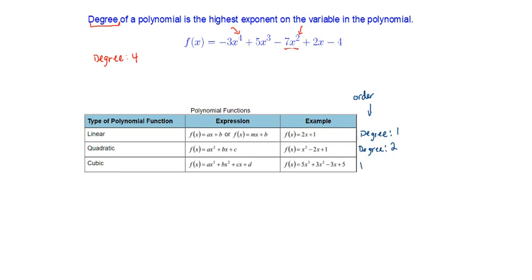For the cubic function, we look at the variables, find the one with the highest exponent, and that gives us degree 3. Whatever the largest exponent on the variable is, that's the degree of the polynomial. So that's an introduction to some of the terminology and functions you'll see when we talk about polynomials.